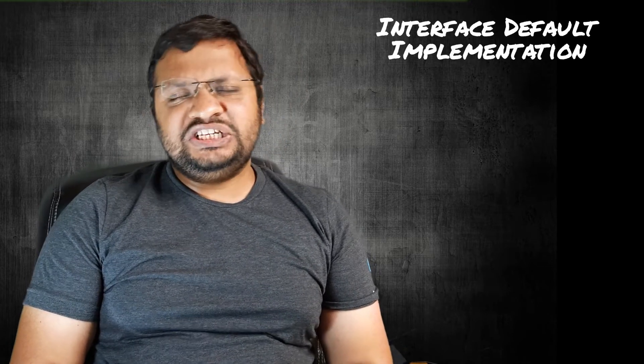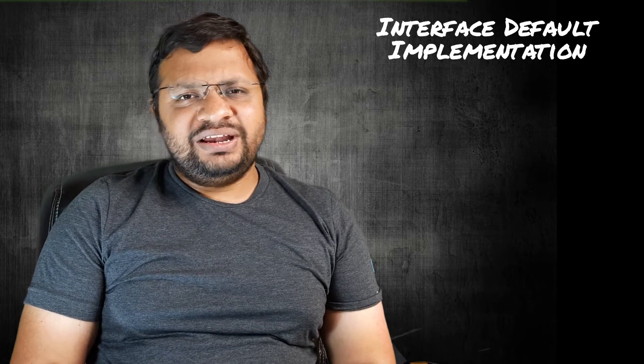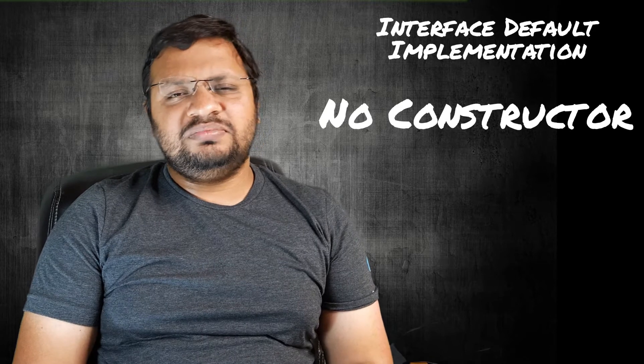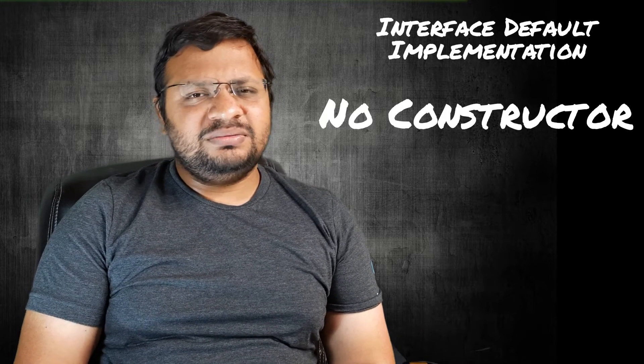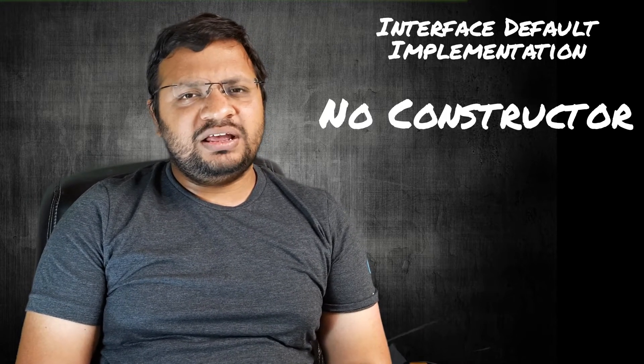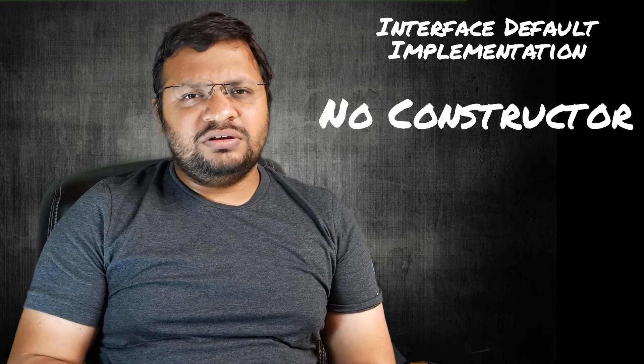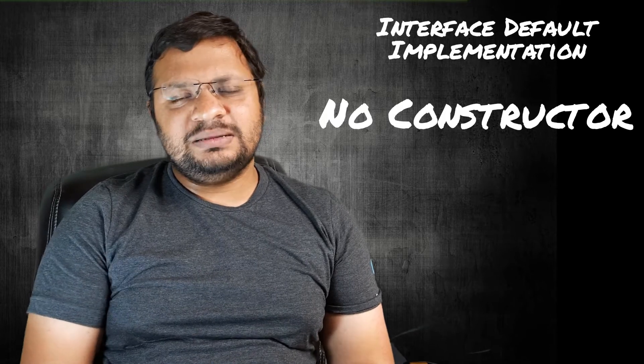Most people capture that interfaces can have default implementations, but they fail to understand why Microsoft added this support. There is one hidden constraint: you cannot have constructors or similar initialization within an interface. If you don't have constructors, you can't have dependency injection — and most modern code is built on DI. Although there are workarounds for that, we'll come to those at a later point.